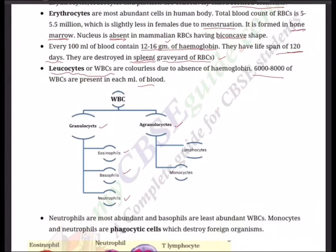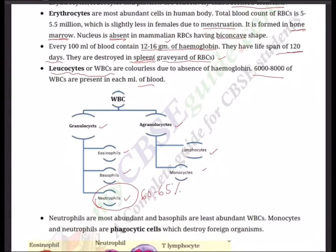Agranulocytes include lymphocytes and monocytes. Neutrophils are the most abundant WBCs — about 60 to 65 percent of the total WBC count. Monocytes and neutrophils are phagocytic cells — about 6 to 8 percent — that destroy foreign organisms entering the body; that's why they are our soldiers. Basophils are about 0 to 1 percent and secrete histamine, serotonin, and heparin, and are involved in inflammatory reactions.